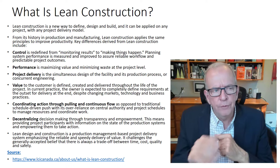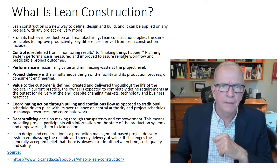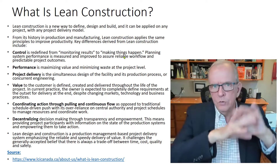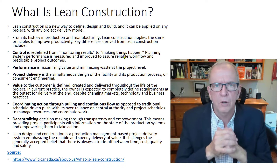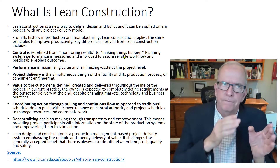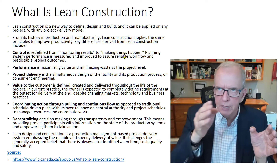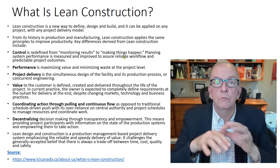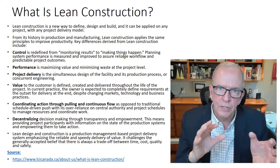That third bullet — 'control redefined from monitoring results to making things happen' — means that traditionally, with Microsoft Project critical path schedules, the weakness is that it's long-term. By the time you update the schedule and see that you're delayed, a lot of other things may have happened. A big advantage of the Last Planner System, which is a system within lean, is that it's a scheduling and collaboration system done jointly at different levels.